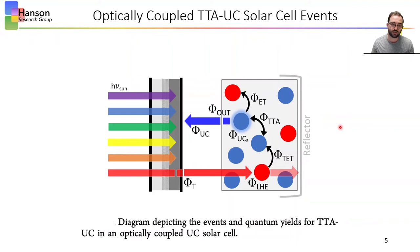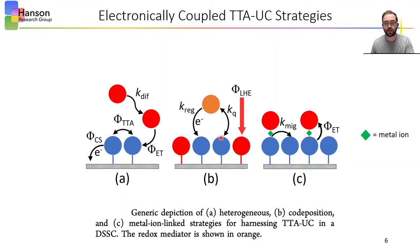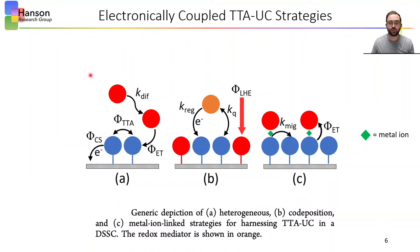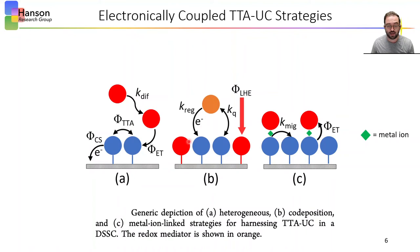The isotropic emission and diffusion limitation are some of the drawbacks to the optically coupled upconversion scheme. Electronically coupled schemes have consisted of three strategies: heterogeneous, co-deposition, and metal ion linked, shown in Figures A, B, and C respectively. The heterogeneous scheme consists of sensitizer molecules dissolved in the surrounding electrolyte solution of the solar cell, while the annihilator is tethered to the charge separation interface to extract charge from the upconverted state. This strategy is limited by the diffusion of the sensitizer into proximity of the surface-bound annihilator molecules. The co-deposition strategy deposits both sensitizer and annihilator molecules directly on the surface to overcome that diffusion limitation, but limits the overall concentration of both molecules in the system.